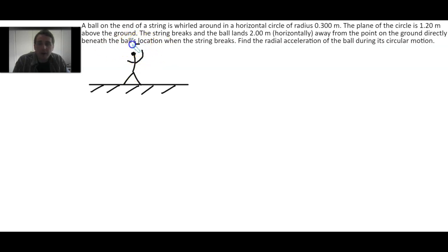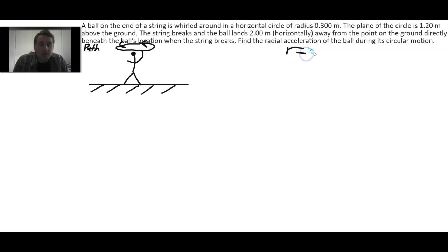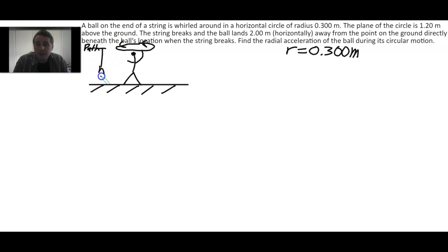Because I'm drawing this in a perspective way, I'll draw it as an ellipse — this right here is the path of the ball. We should also write down our knowns. The radius R is 0.300 meters, that's 30 centimeters. The plane of the circle is 1.20 meters above the ground, so we call that H. H is 1.20 meters, and the radius of the circle is R.